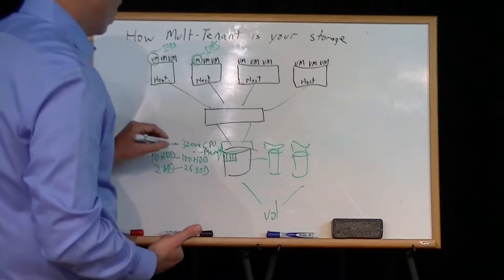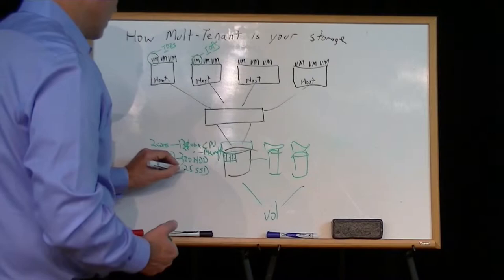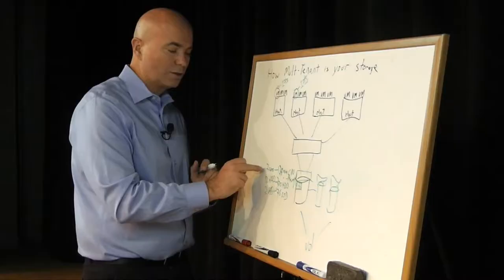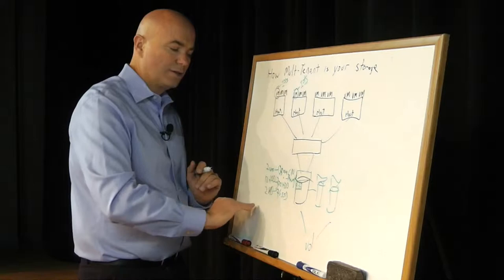And then, so now instead of 32 cores, I might have 128 cores total. I might have 300 hard drives. I might have 75 SSDs, each one of these fully loaded. Again, the same capabilities. I still go in and buy the cores I need. I go in and buy the hard drives I need. I go in and buy the SSDs I need.